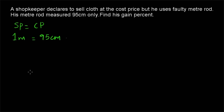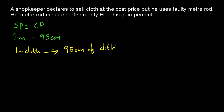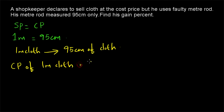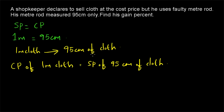When his 1 meter rod is measuring only 95cm, that means when he is selling what he claims is 1 meter of cloth, he is actually selling only 95cm. We can write it as: cost price is equal to selling price as given. The cost price of 1 meter cloth is equal to the selling price of 95cm of cloth. He is selling 95cm of cloth at the cost price of 1 meter.